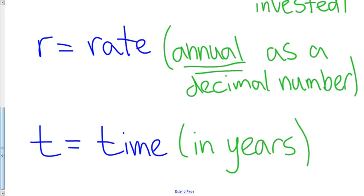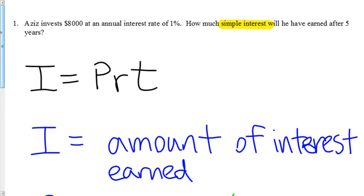So let's go back to our question. We want to identify the parts of the question. Aziz invests $8,000. So what is $8,000? $8,000 is the principal. That is the amount invested.